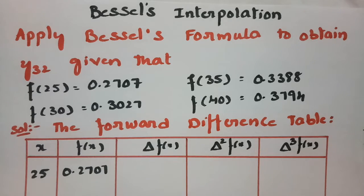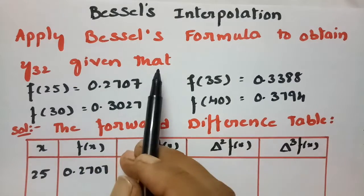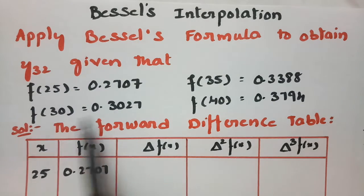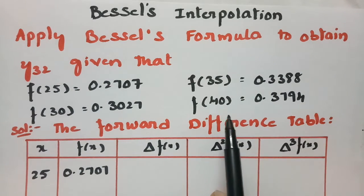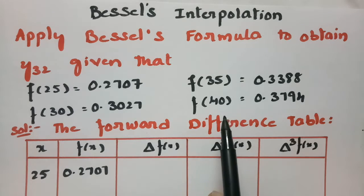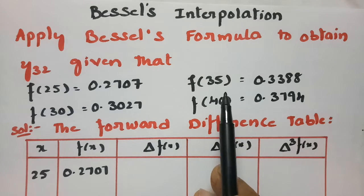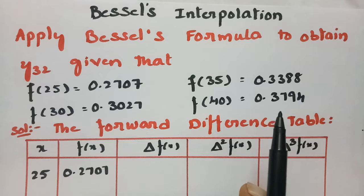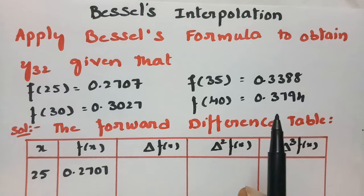In this video, I am going to apply Bessel's formula to obtain y at 32, given that the values at x = 25, 30, 35, and 40 are provided. So I have to find out f(32), the value for 32, using Bessel's formula.